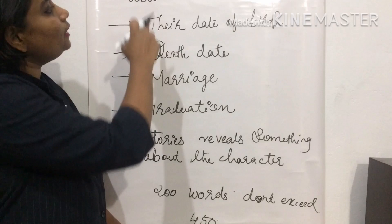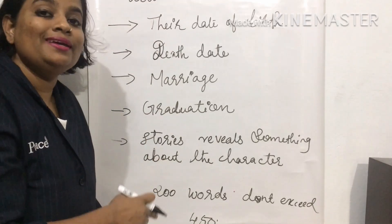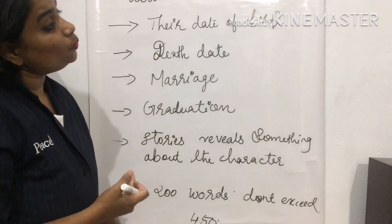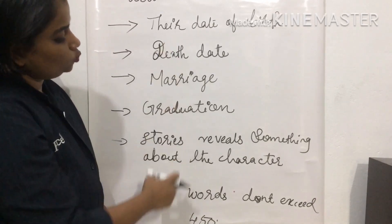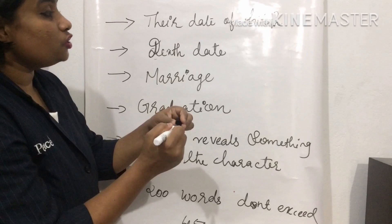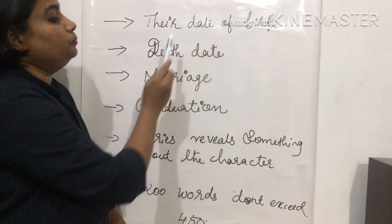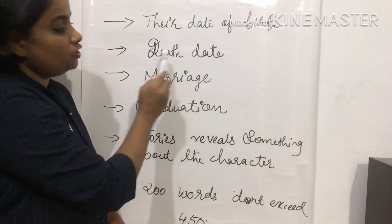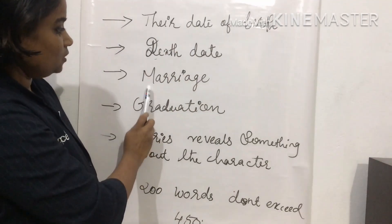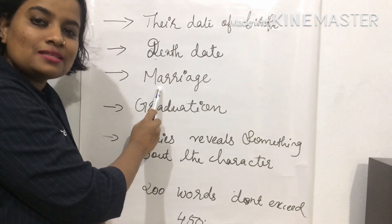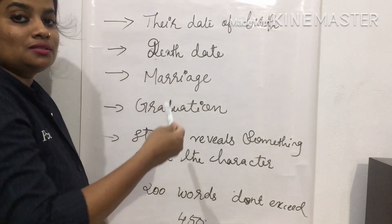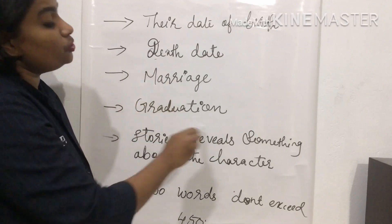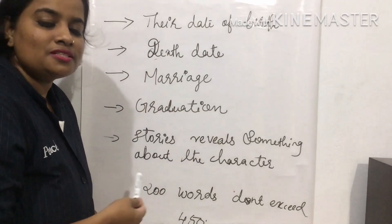Now I am going to discuss the key elements of an obituary report — what you need to mention when writing one. First, you need to include the date of birth and the date of death of the person. Next, if the person was married, you may write something about their marriage, their spouse, and the stories behind them.